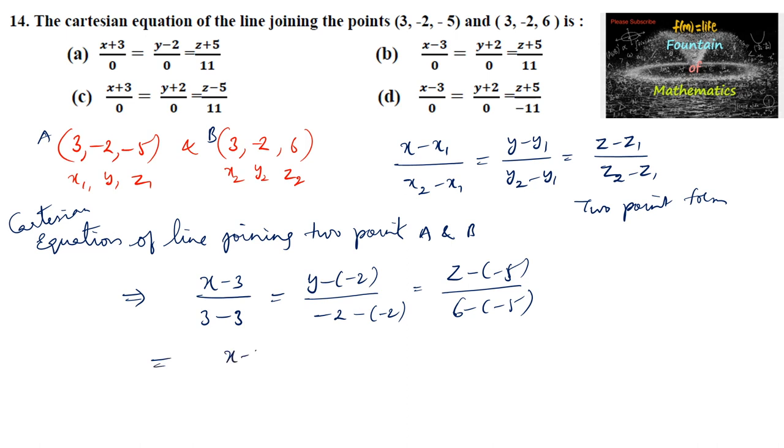Which is x minus 3 upon 0 is equal to y plus 2 upon 0 is equal to z plus 5 upon 11. So the equation of the line is x minus 3 upon 0, y plus 2 upon 0, z plus 5 upon 11, which is option B.